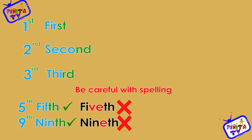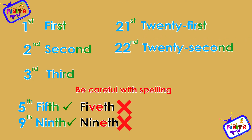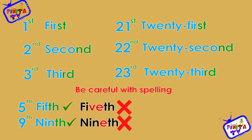This also happens with ordinals that end in these numbers: 21st, 22nd, 23rd, 25th, 29th.